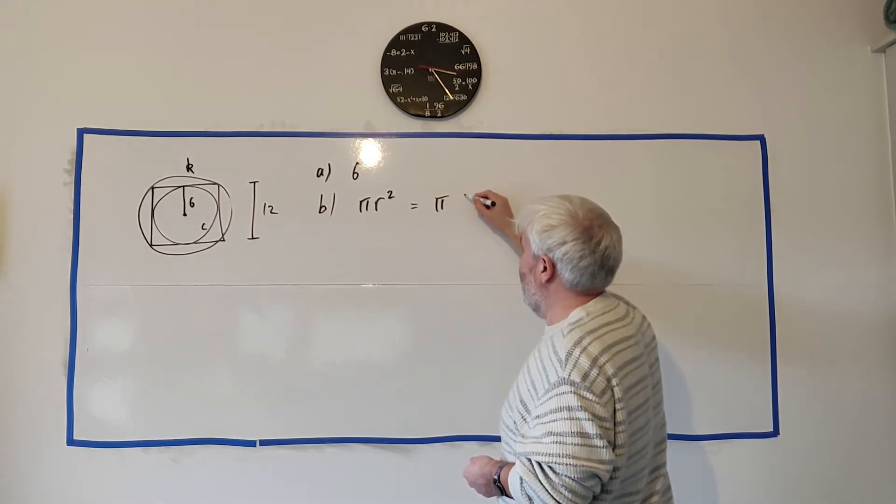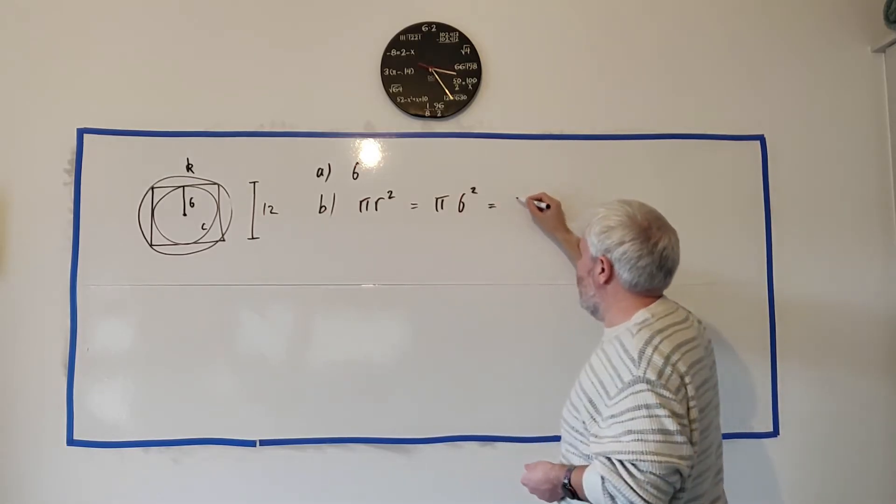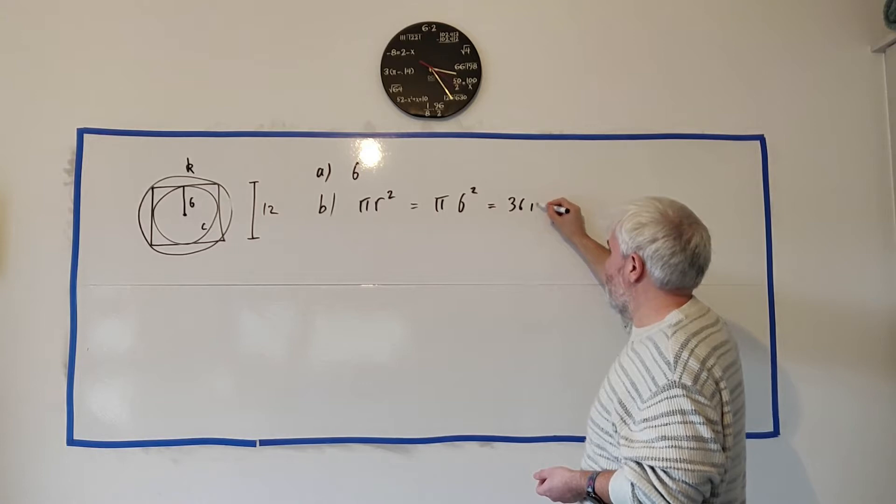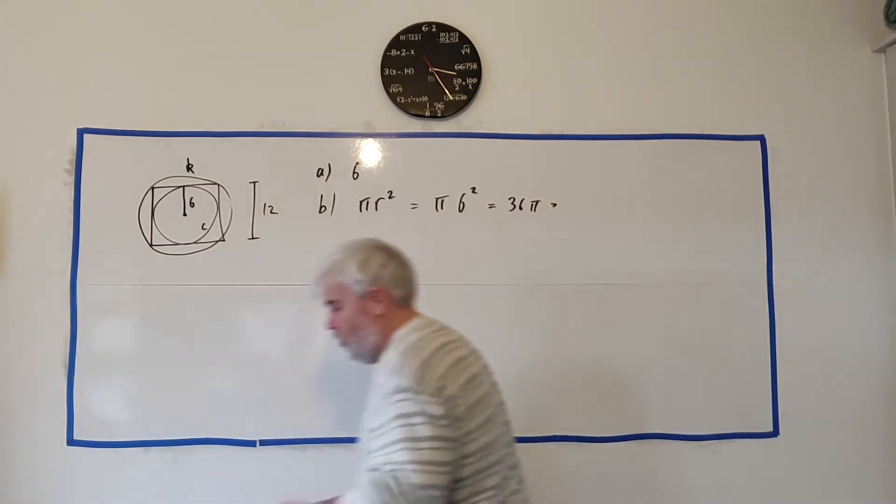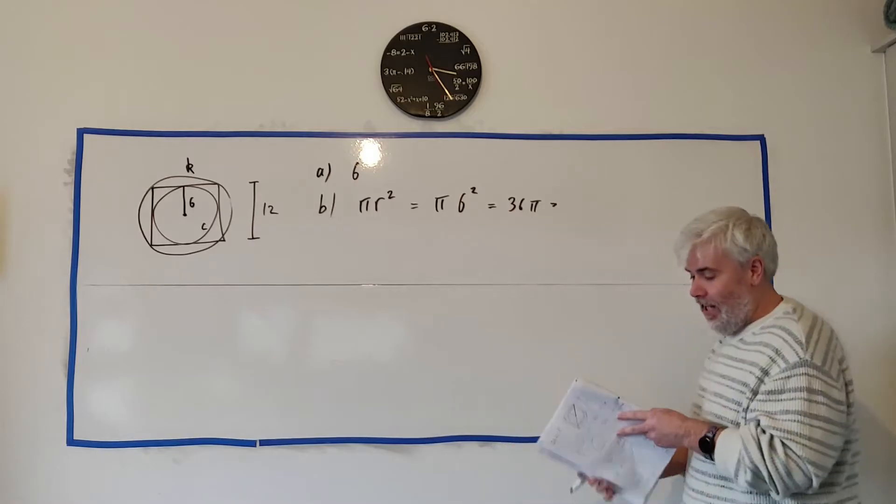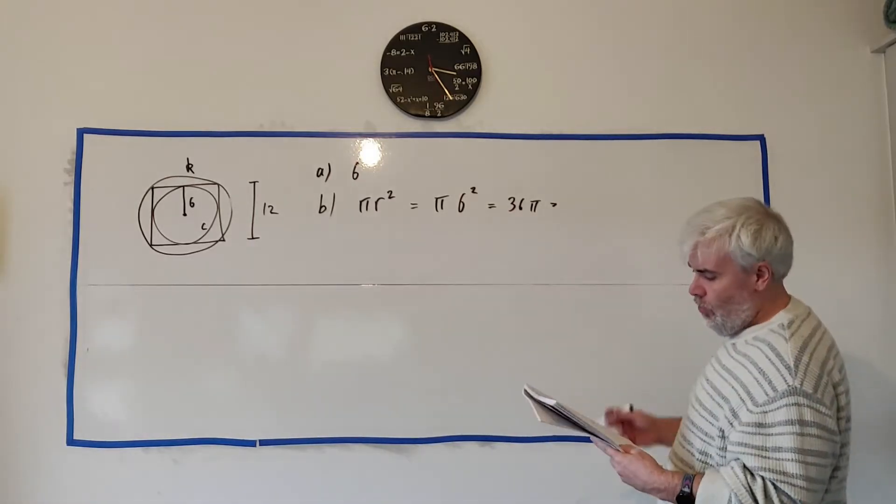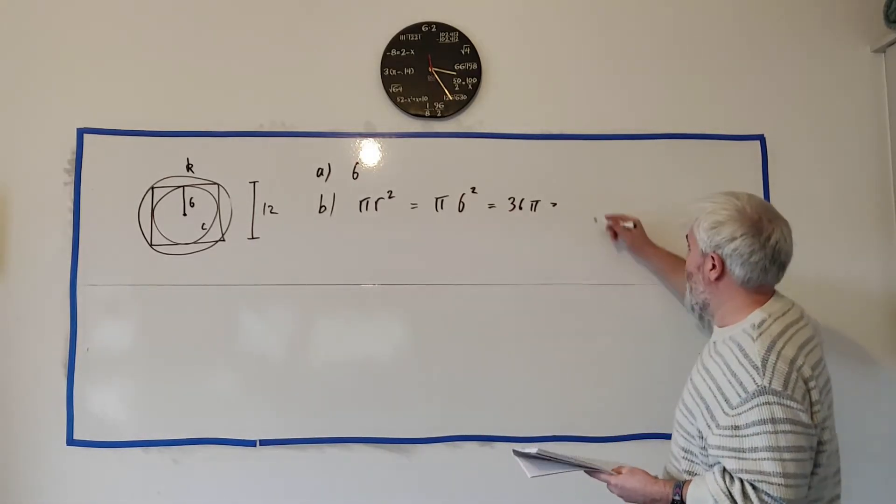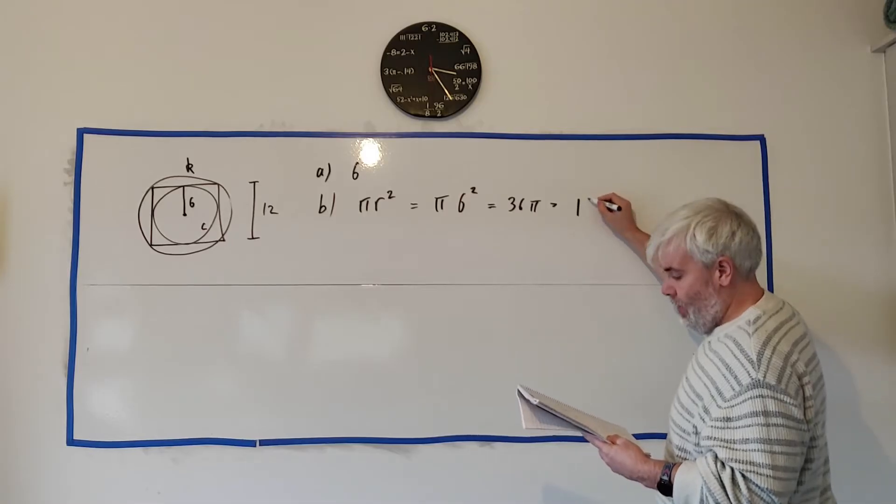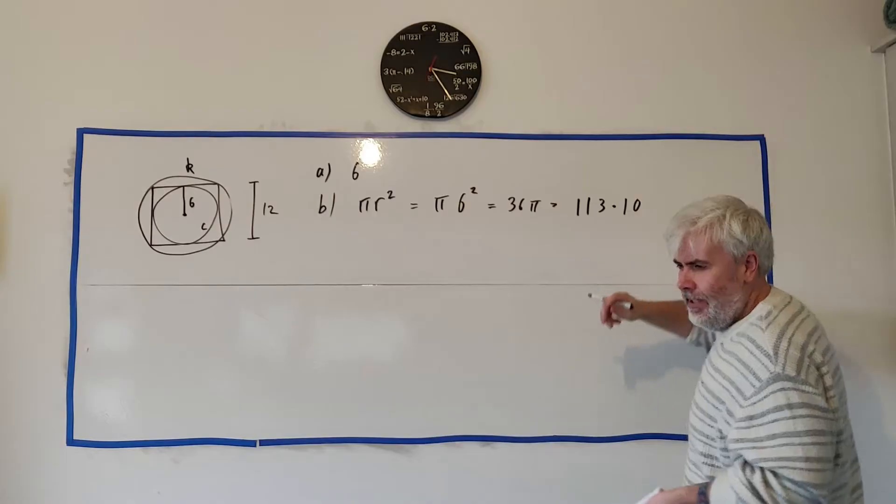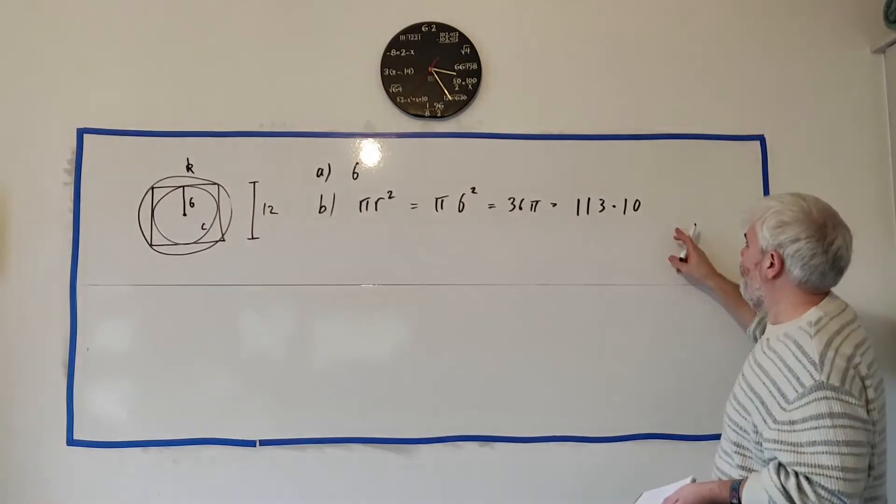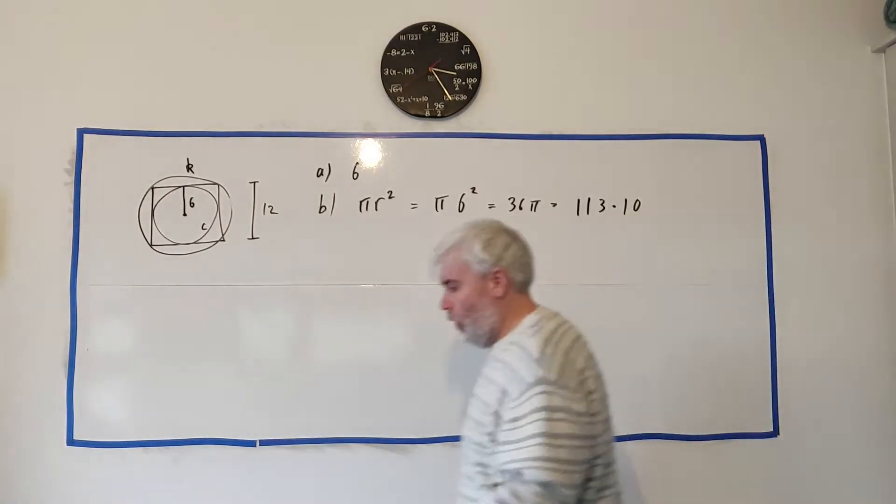And that's pi multiplied by 6 squared which is, put that into a calculator, 36 pi and ask the calculator to give you more decimal places and you should get rounded off to two decimal places you should get 113.10. I think it's 0.9 but it rounds up to 1.0.